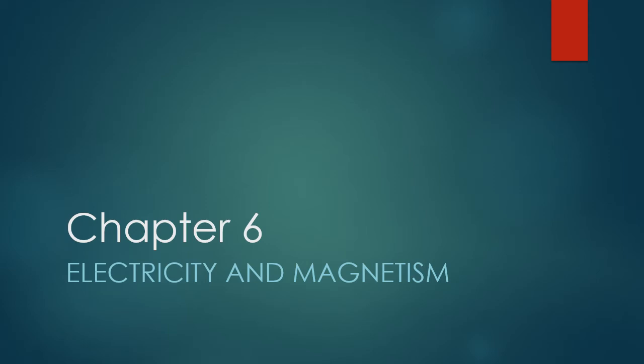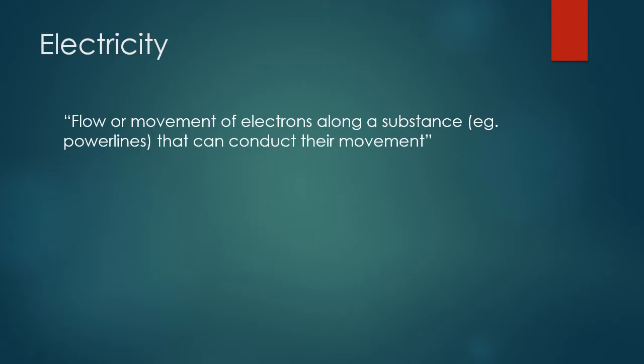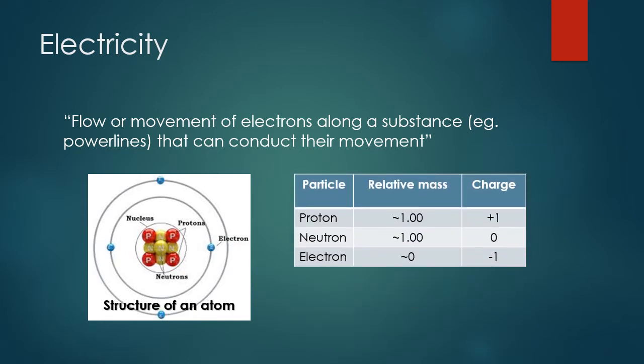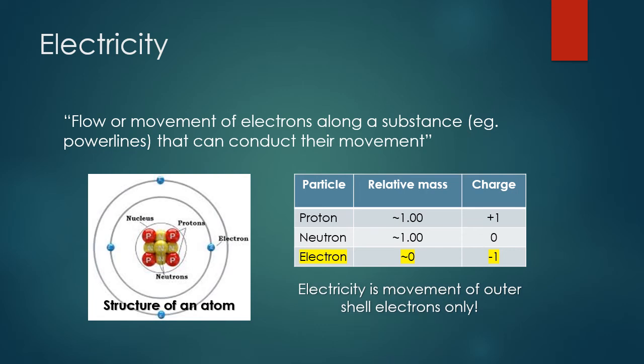In this chapter we're going to be exploring electricity and magnetism. Electricity is the flow or movement of electrons along a substance. Looking back at our chemistry chapters, electrons were those subatomic particles in an atom that surround the nucleus. They are negatively charged particles, and these electrons are what makes up electricity. They have a negative one charge and their relative mass is negligible.